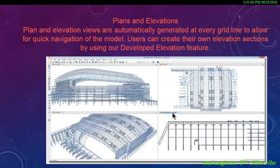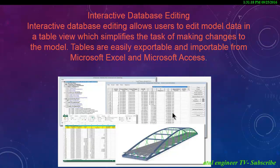In SAP 2000, grids can be defined as Cartesian or cylindrical. There is no limit to the number of grid systems in a model, and they can be rotated in any direction or placed at any origin within the model. Plan and elevation views are automatically generated at every grid line to allow for quick navigation of the model.